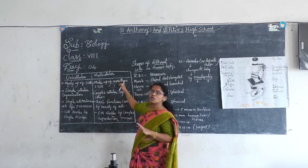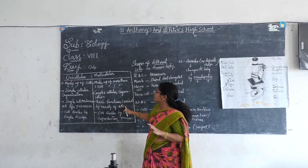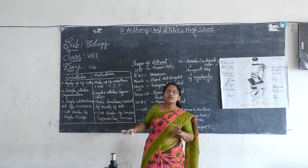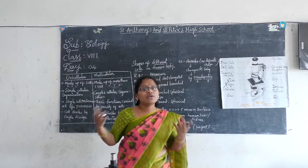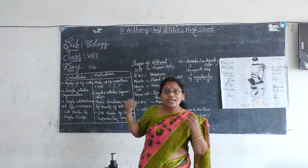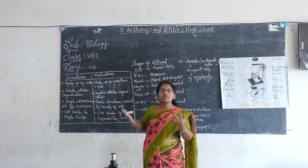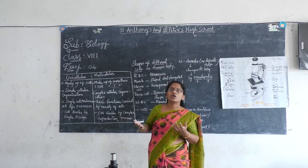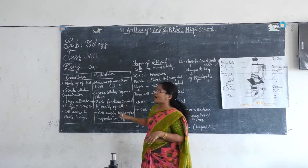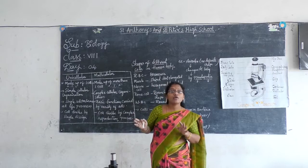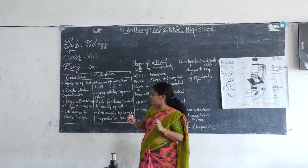But coming to multicellular organisms, we require a variety of cells. In our body, different types of cells are there — different organs, different tissues — all the cells make an organ system and an organism. So here we require a variety of cells to perform life processes.